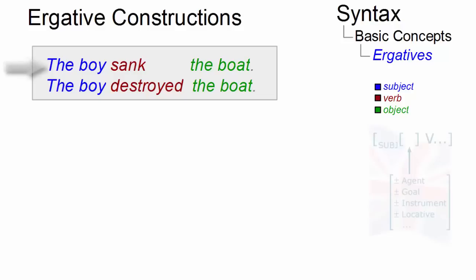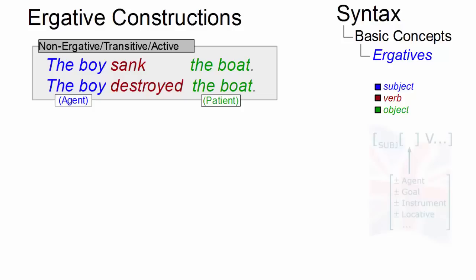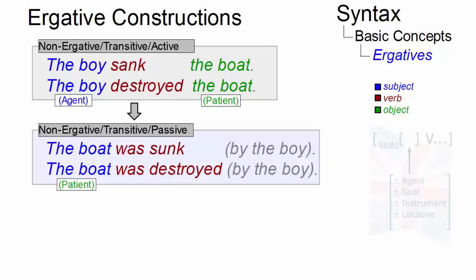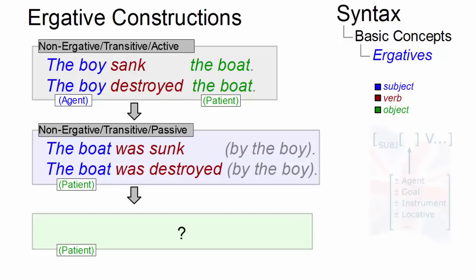The boy sank the boat versus the boy destroyed the boat. In both cases we have an agentive subject, a transitive verb, and an object as a patient. Such sentences can of course be passivized, where the by-phrase is optional and the subject is now the patient. But what happens if we use these passive constructions as actives?